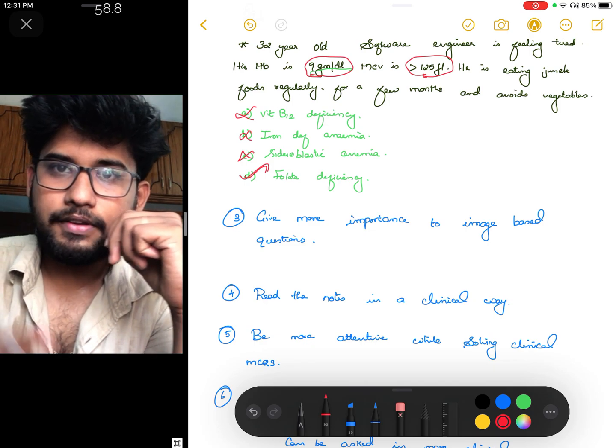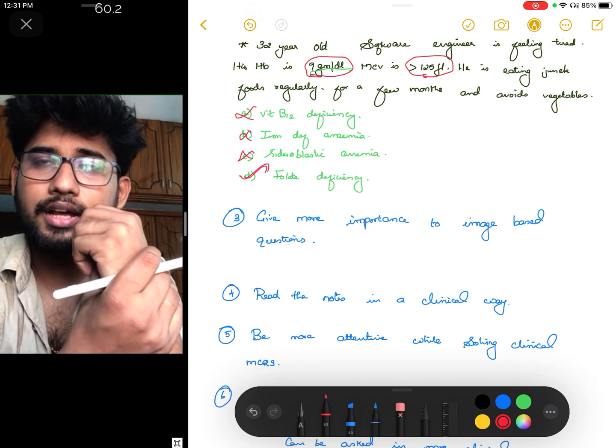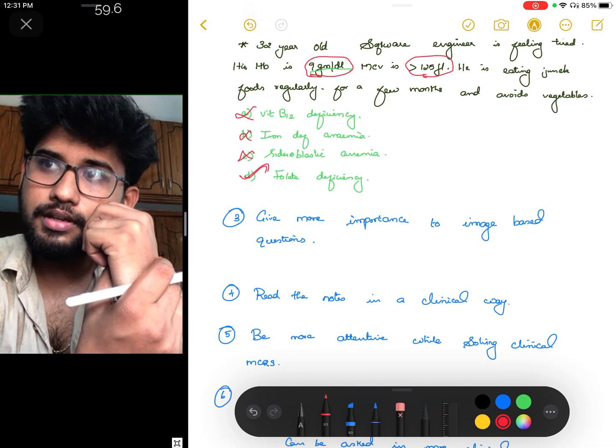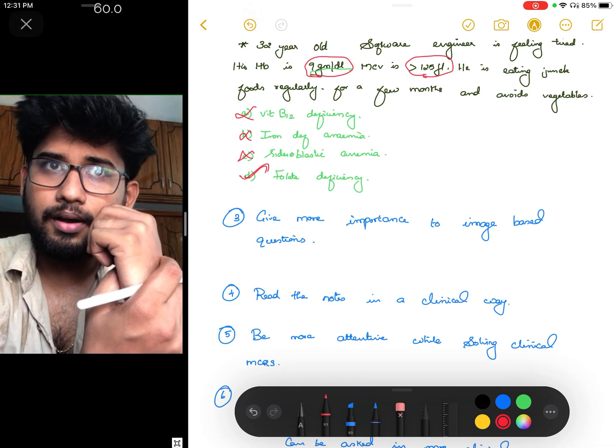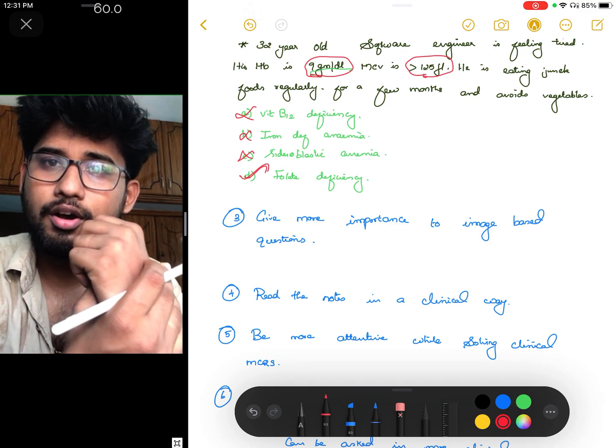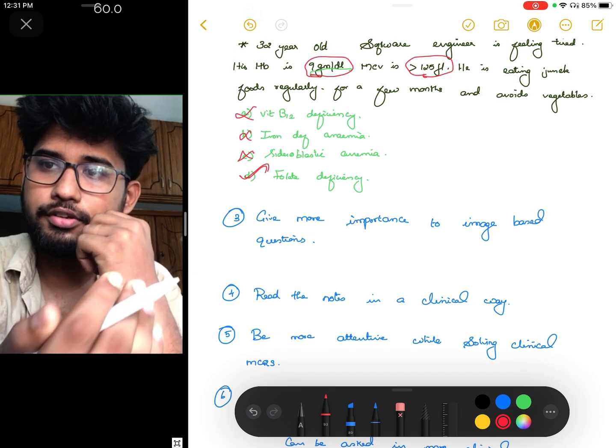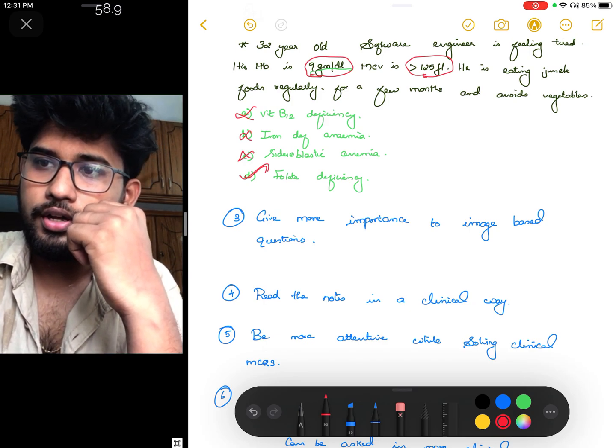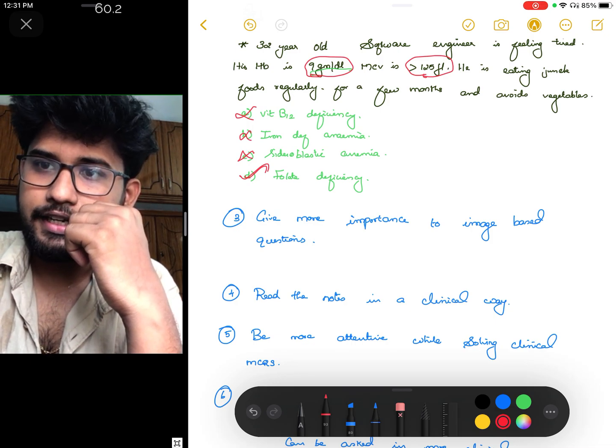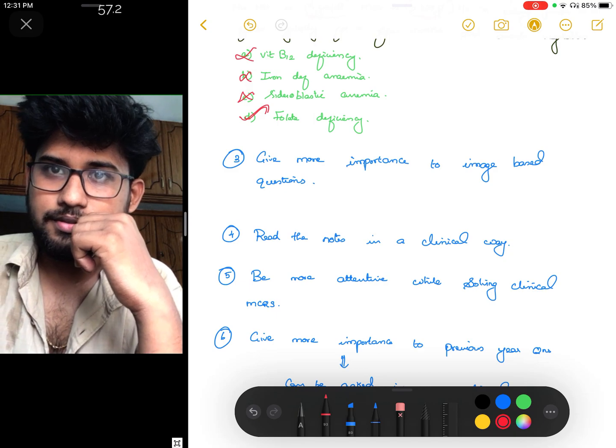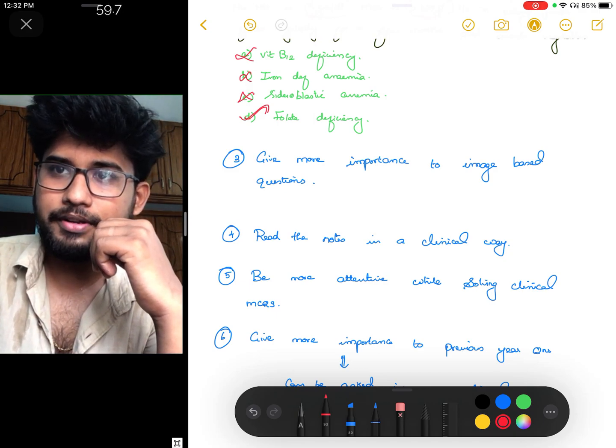The fourth point is: read the notes in a clinical way. If you are reading notes regarding any topic, you can also set a question. If you are an examiner, how will you set a clinical basis from this topic? You have to read in such a way and try to read each and every topic in a clinical way. Be more attentive while solving clinical MCQs.